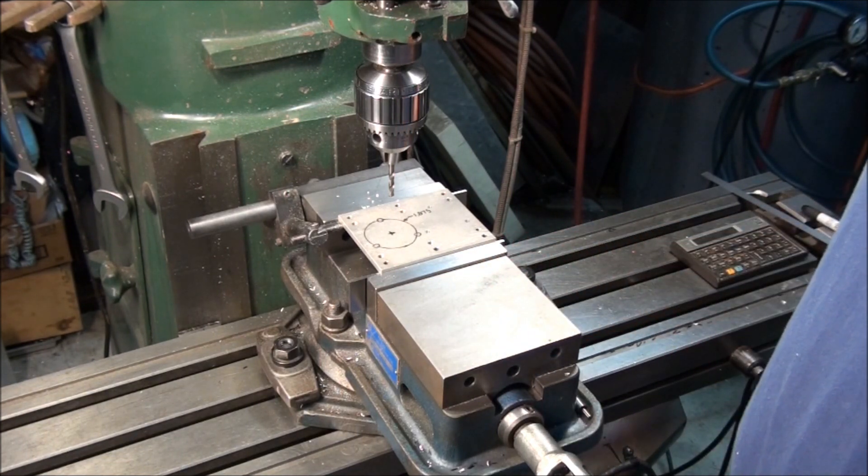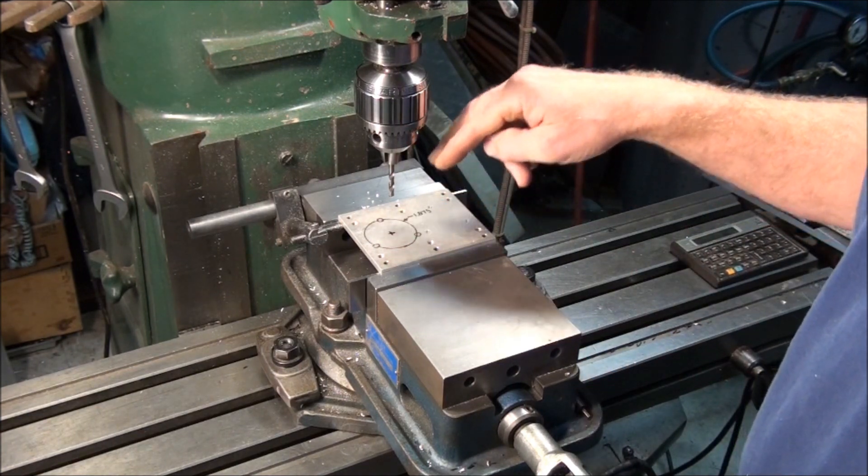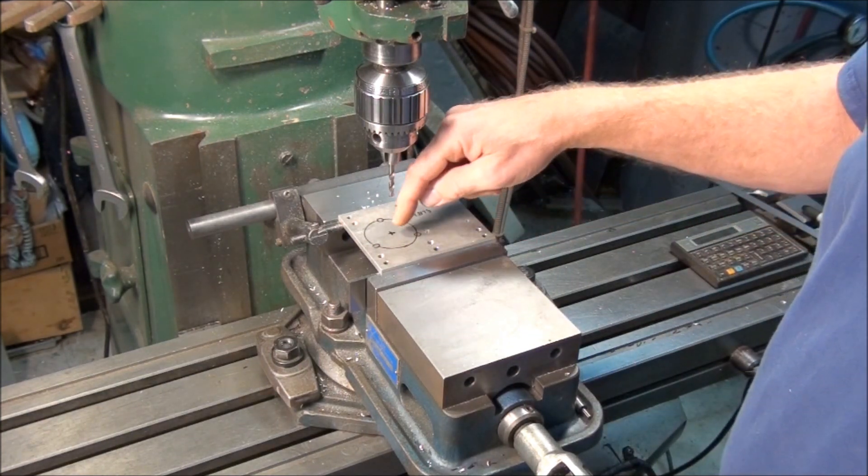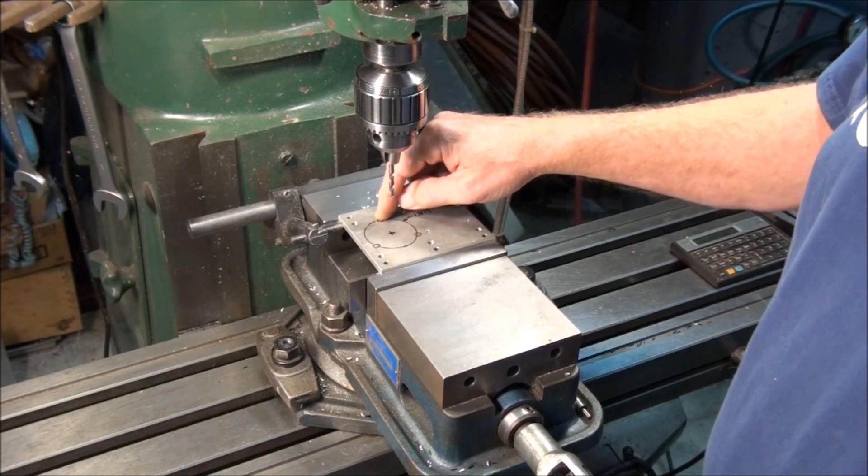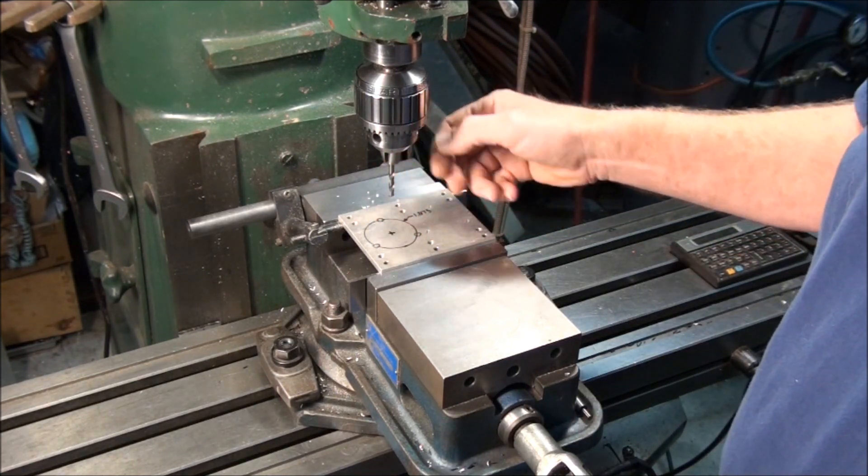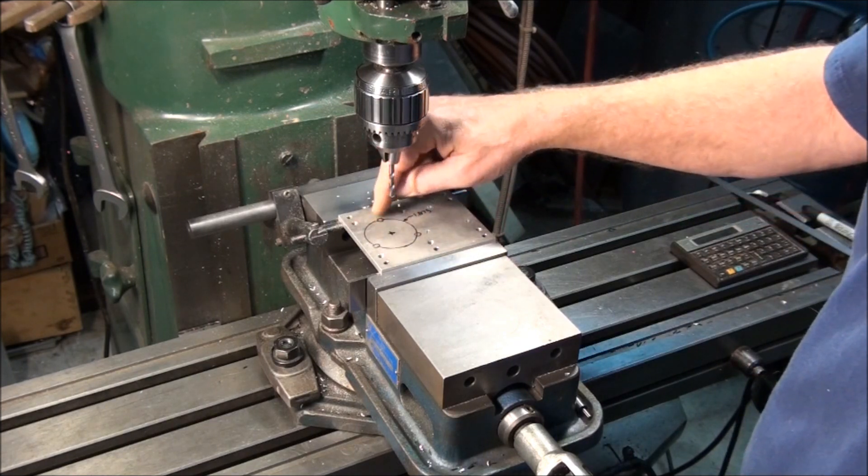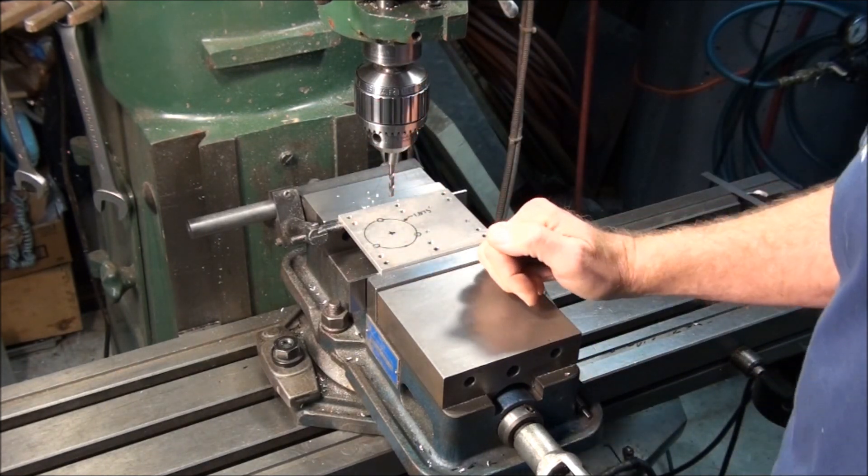What you can do, one way to do it, is you can take the part out and set up on a rotary table. Locate the center of the bolt circle, locate the center of one of the holes, and just rotate around with your rotary table, in this case three holes, so that would be 120 degrees between holes. That's one way to do it.